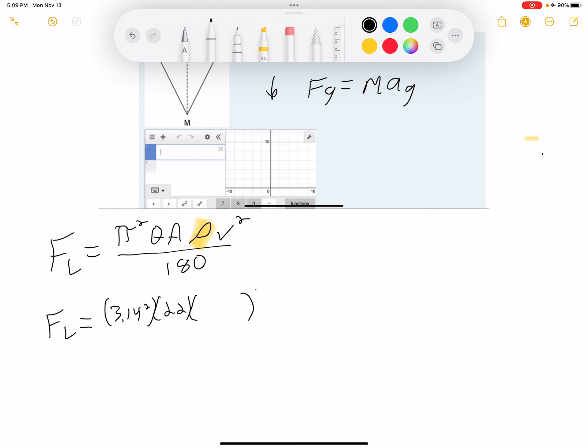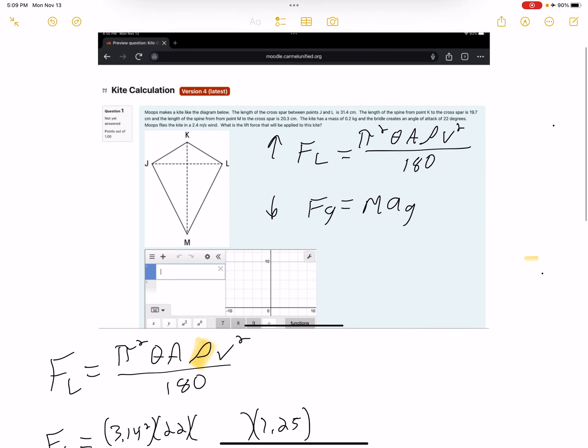V squared. V is obviously for velocity. So we need to find the velocity. So if we look up here, the velocity is 2.4.